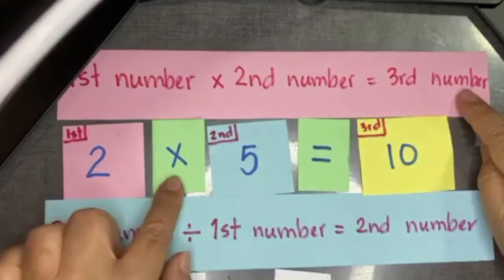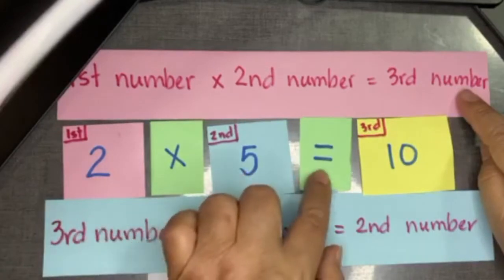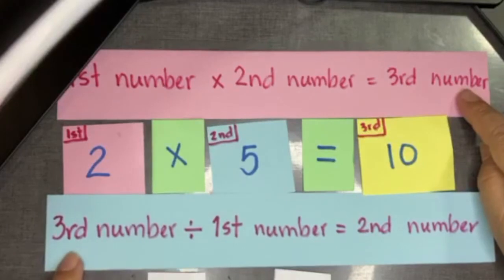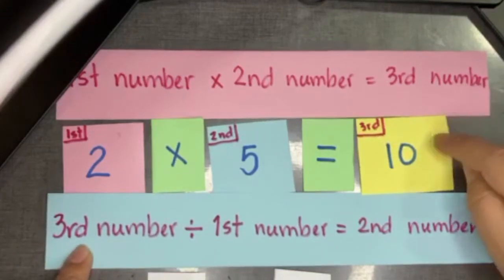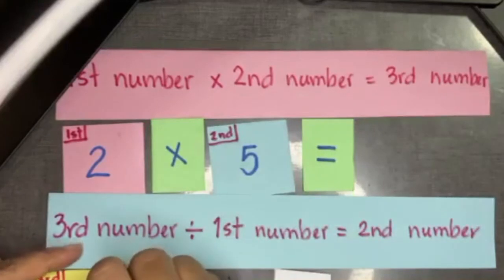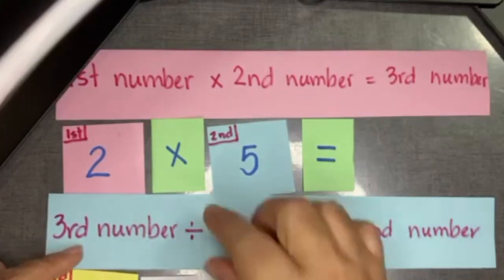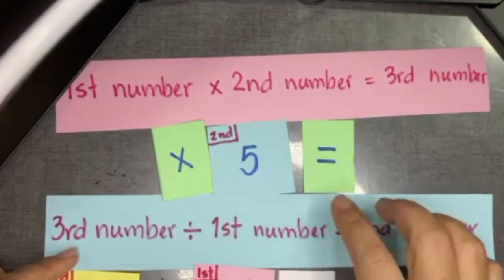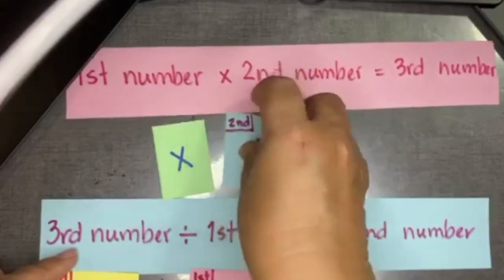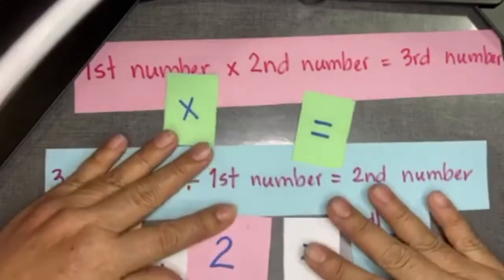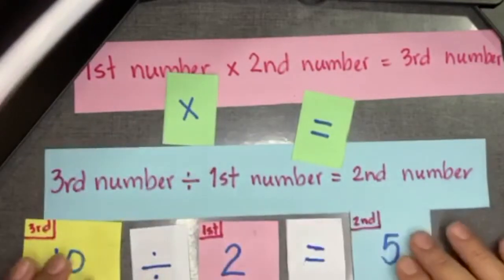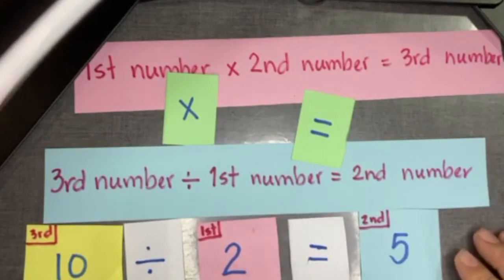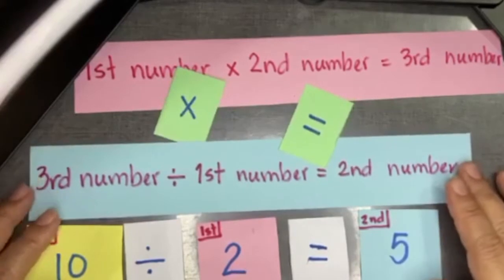Two times five equals ten. And then here you can see the third number divided by the first number equals the second number. So here it is: ten divided by two equals five.